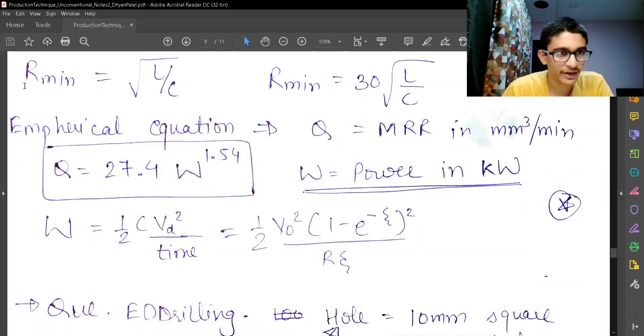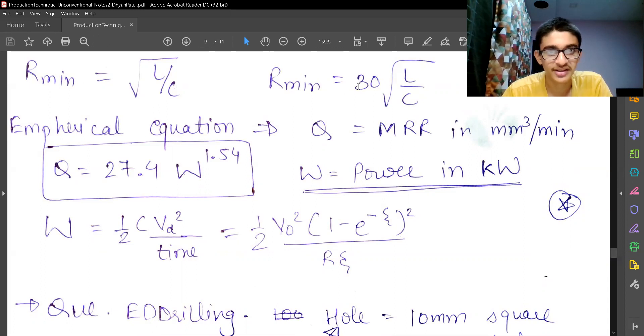So my minimum R is defined as square root of L upon C, but here practically we'll take the minimum value of R is equal to 30 into square root of L upon C.